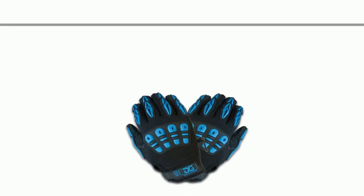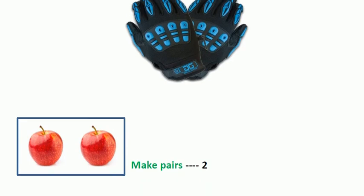Now it is very clear what a pair is. A pair means it should have a twin number. Now in this picture you can see apples. Do the apples make a pair? Yes, the apples make a pair because here we can see two apples — we have two in number. So we can see that they make a pair.